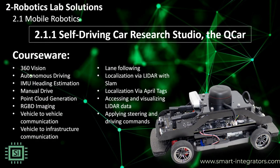The self-driving car research studio workstation includes the QCAR — single vehicle or vehicle fleet — a high-performance computer with RTX graphics card with Tensor AI cores, three monitors, high-performance router, a wireless game pad, the software QUARC autonomous license, a set of reconfigurable floor panels with roadway patterns, and a set of traffic signs.